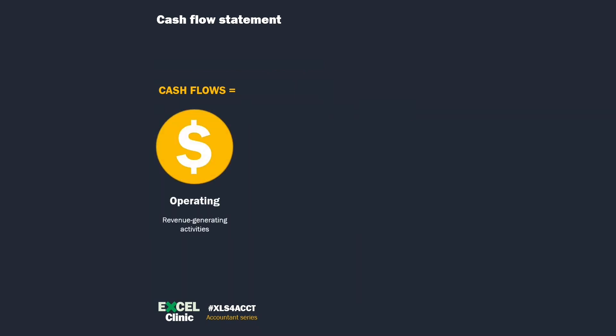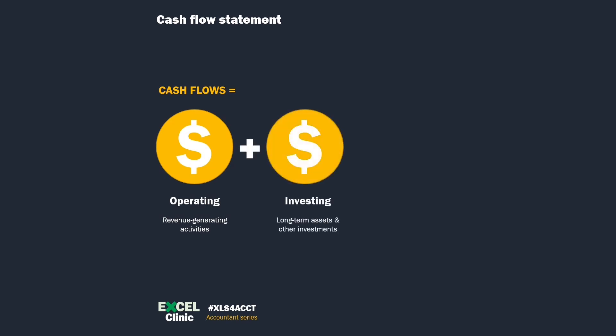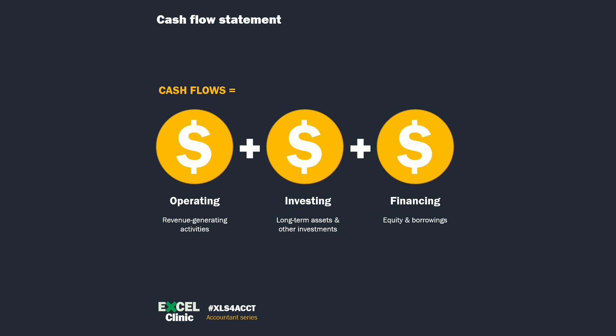IAS 7 requires an entity to segregate its cash flow items into three buckets. Operating activities are those relating to revenue-generating activities. Investing activities are those relating to long-term assets and other investments. Lastly, financing activities are those relating to equity and borrowings. There are two methods allowed for operating cash flows: direct and indirect.